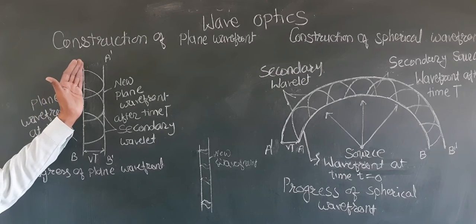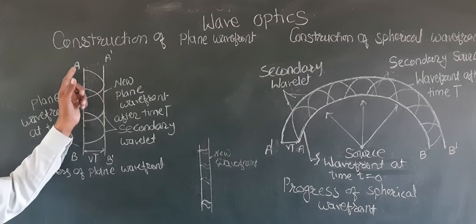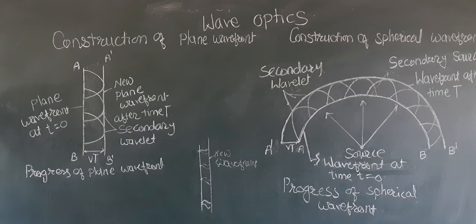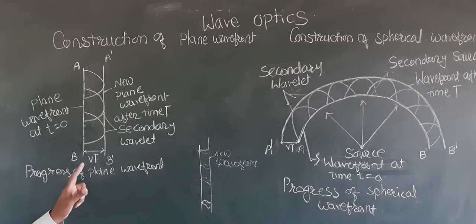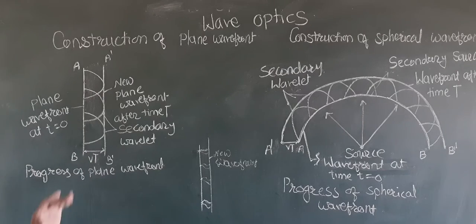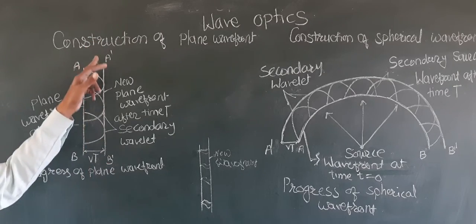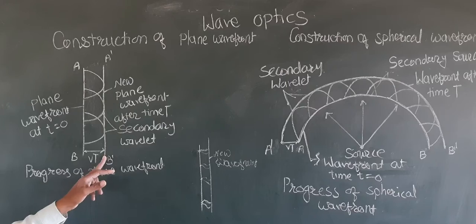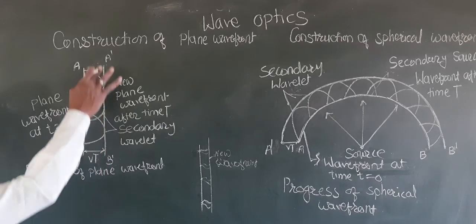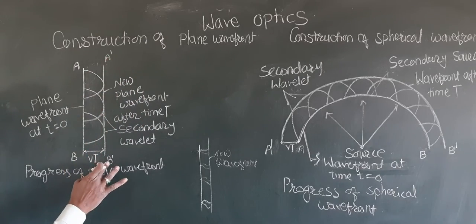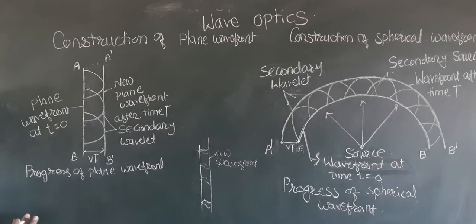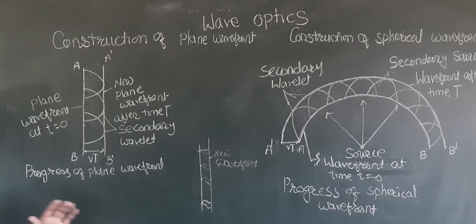These wavelets form a hemisphere. At time t, the radius of these hemispherical wavelets is vt, where v is the speed of light. The envelope drawn to all these spherical surfaces at time t represents the new plane wavefront. So A'B' is the new plane wavefront. This is the construction of the plane wavefront.